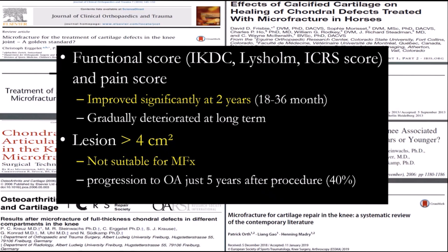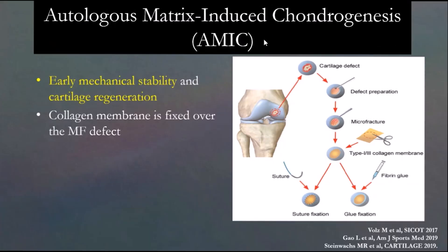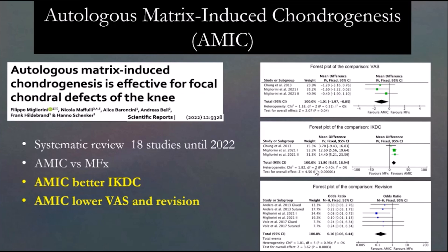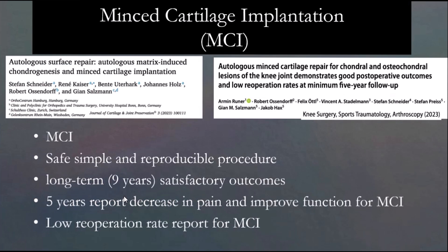Autologous matrix-induced chondrogenesis (AMIC) is a one-stage surgery, good for medium-size lesions around two square centimeters. It provides early mechanical stability and cartilage regeneration, with a collagen membrane fixed over the defect. Mid-term and long-term outcomes are pretty good — functional scores improve from three to seven years, with good quality repair tissue on MRI. Return to sport for single lesions is nearly 100%, but only about 40% for multiple lesions. A systematic review shows AMIC outcomes are better than microfracture in terms of IKDC and VAS scores and revision rate.